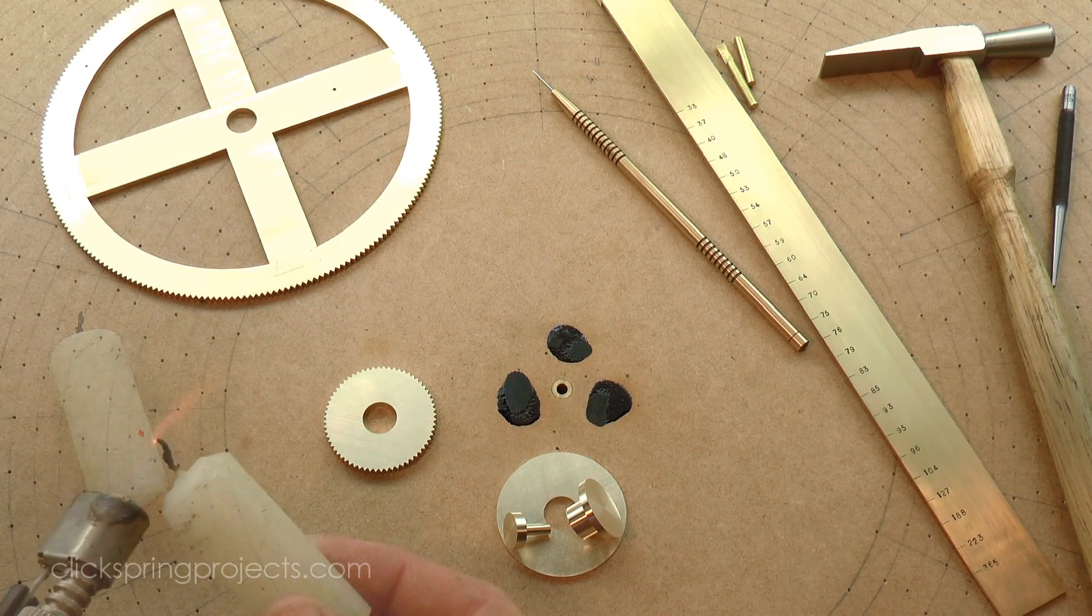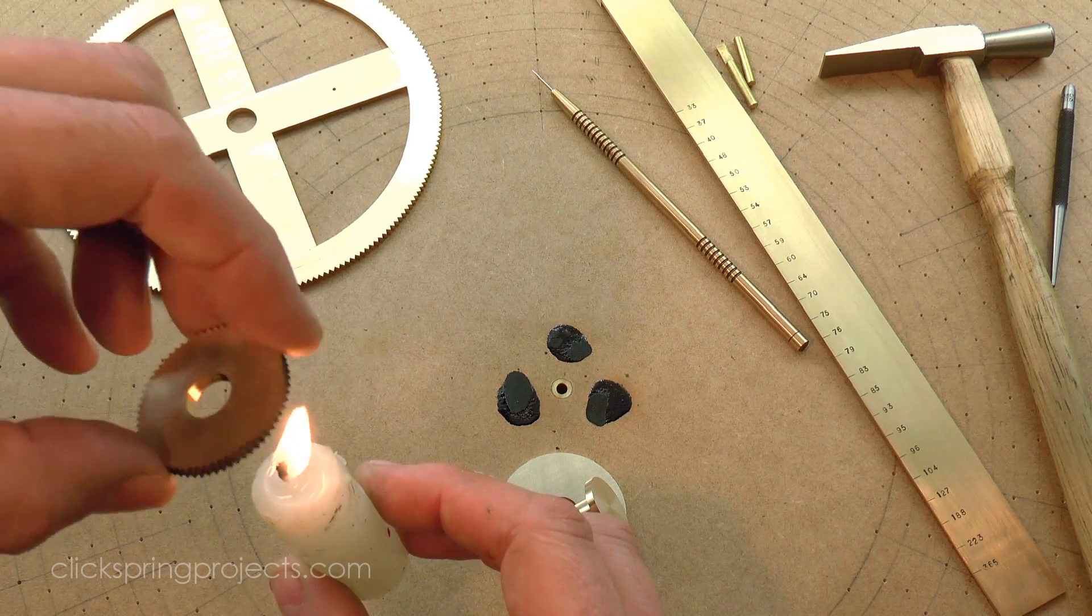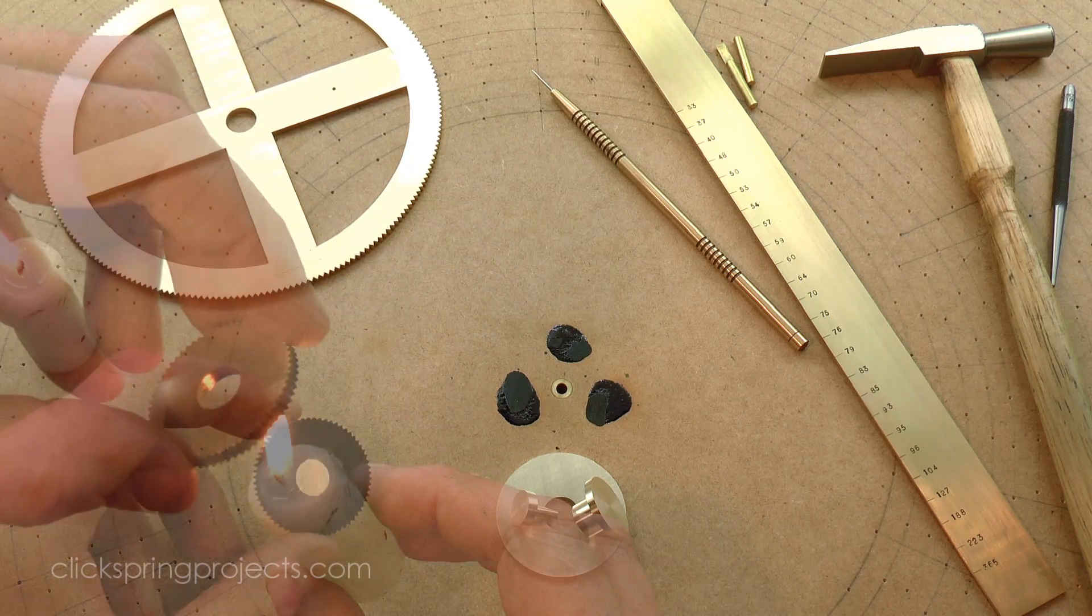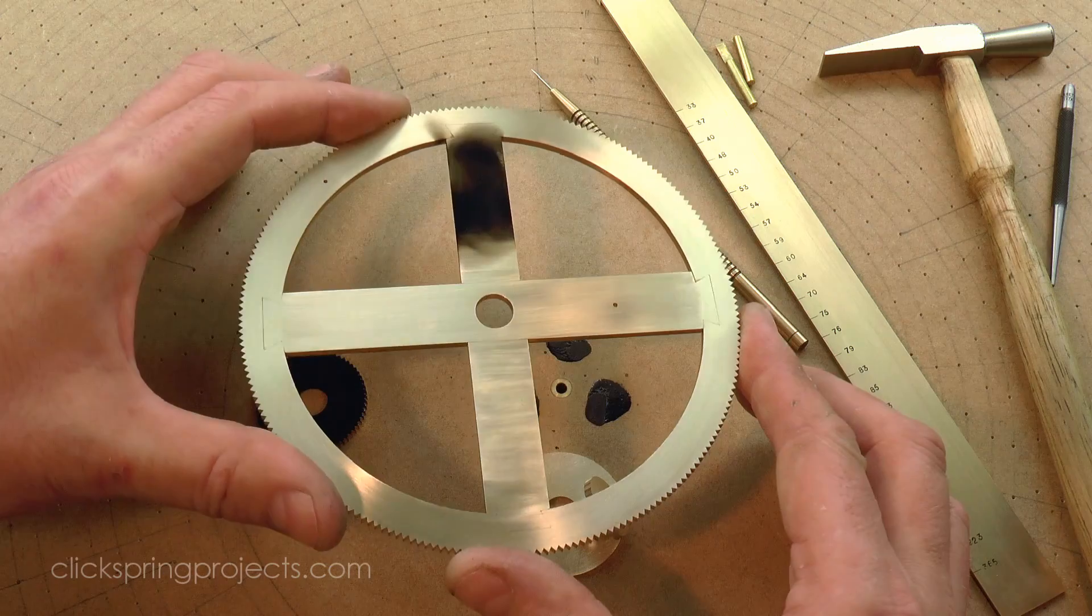Now it certainly doesn't meet the requirement of robust handling, but a very straightforward marking material worth investigating is candle soot. It can be applied and removed easily, and the contrast it provides is excellent.